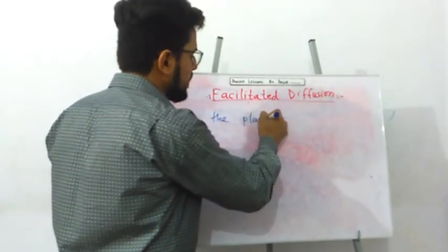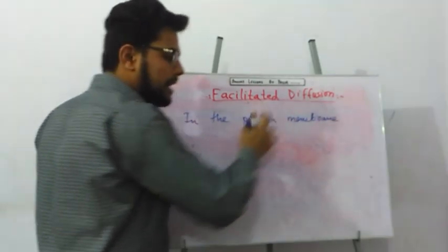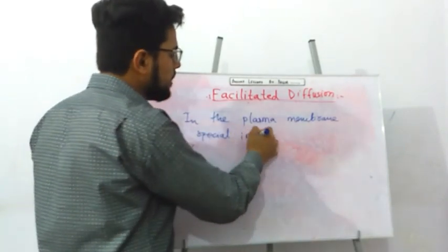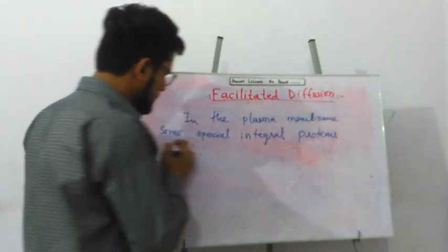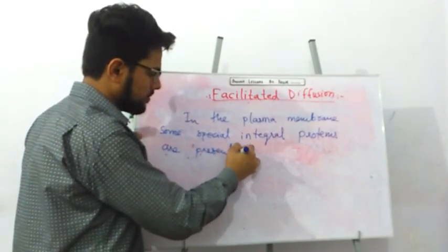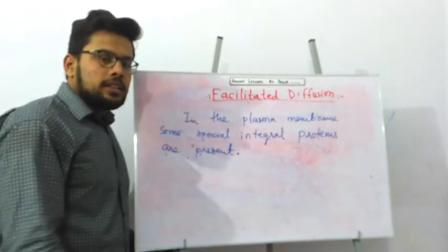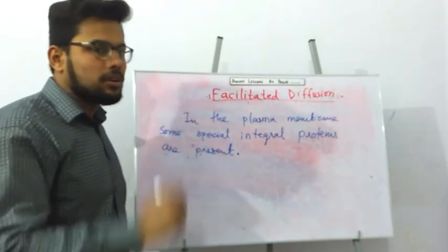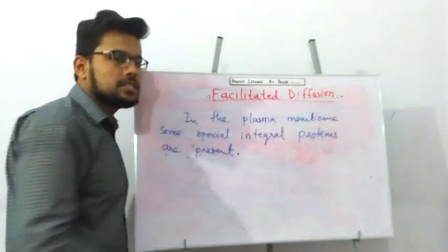The plasma membrane is a semi-permeable membrane. In the plasma membrane, some special integral proteins are present. The function of these integral proteins is to take some molecules and transport them across the membrane.